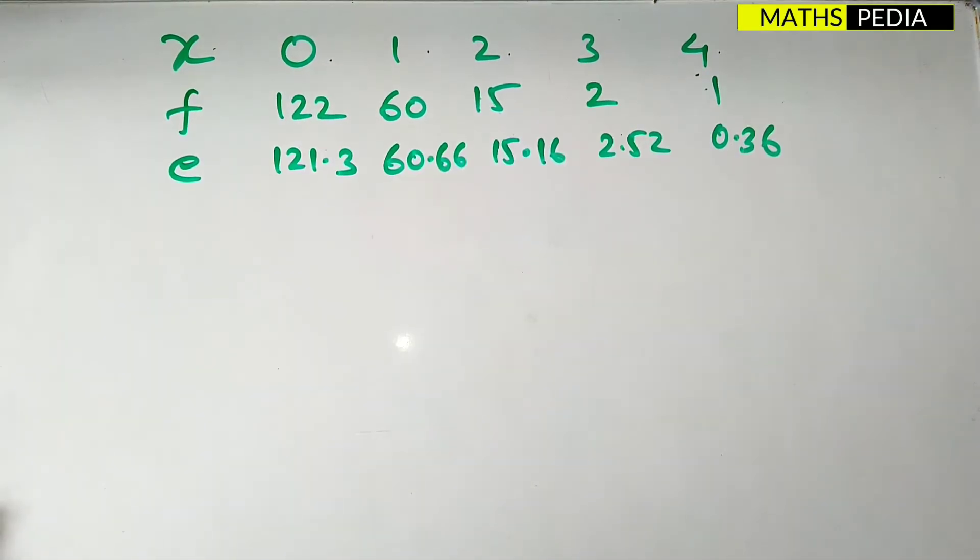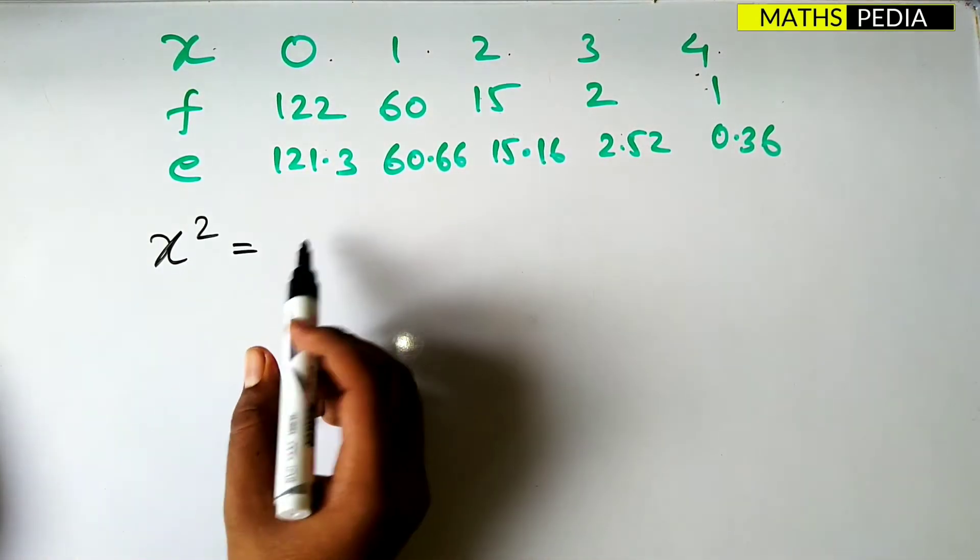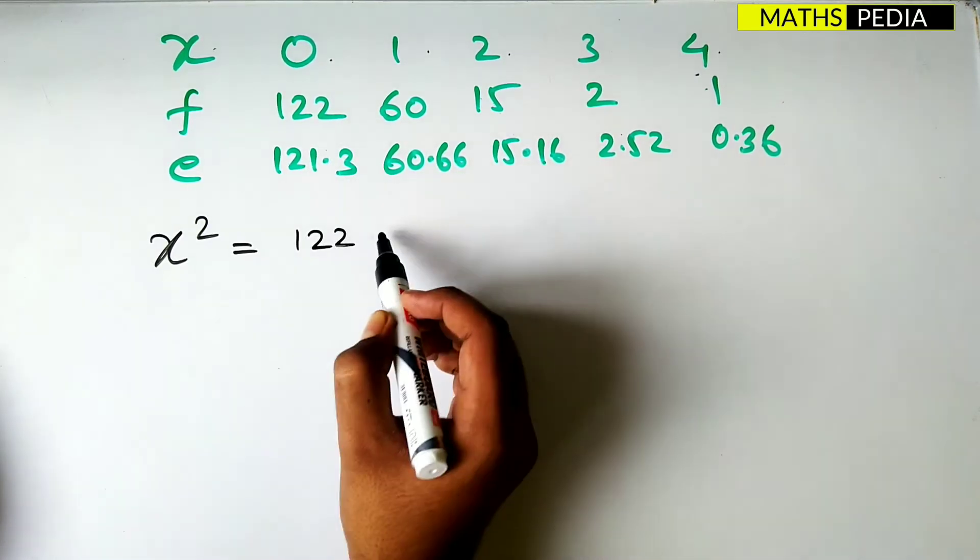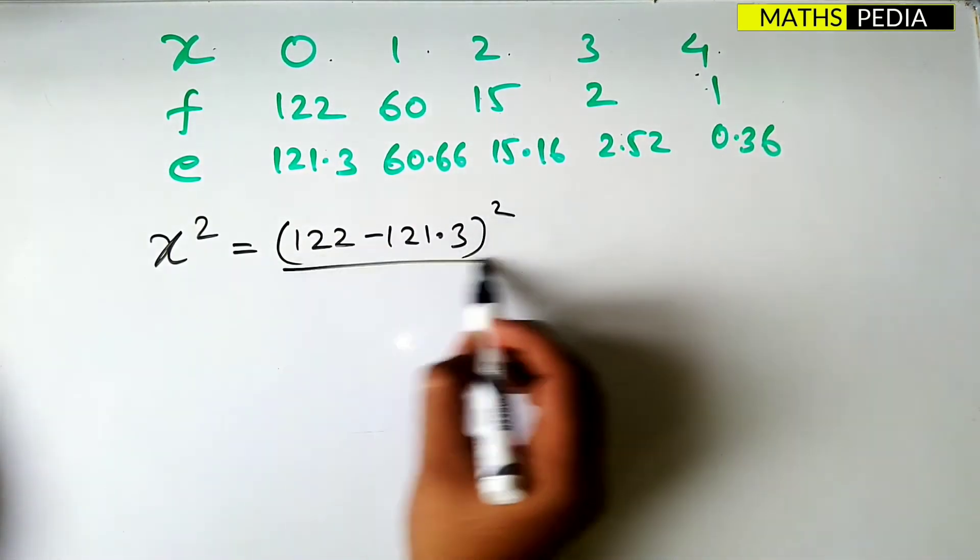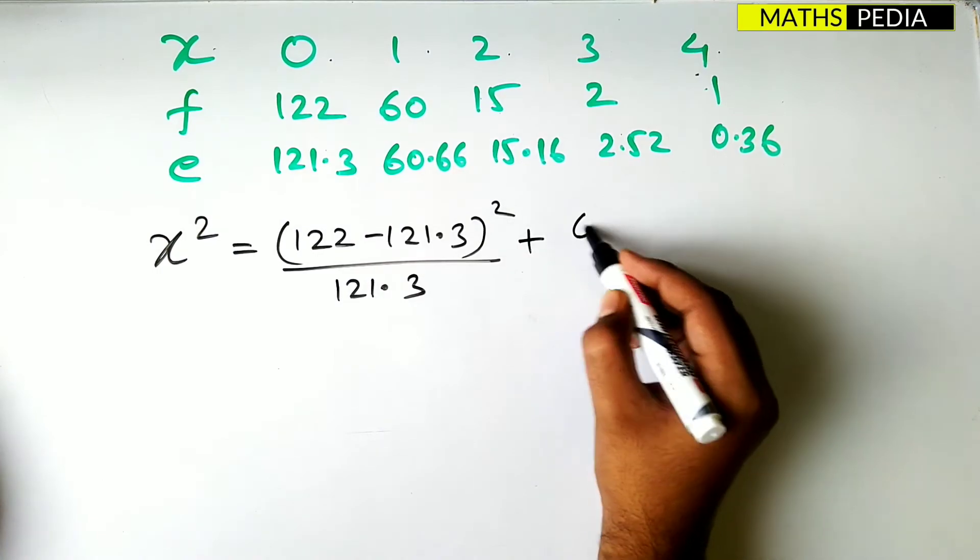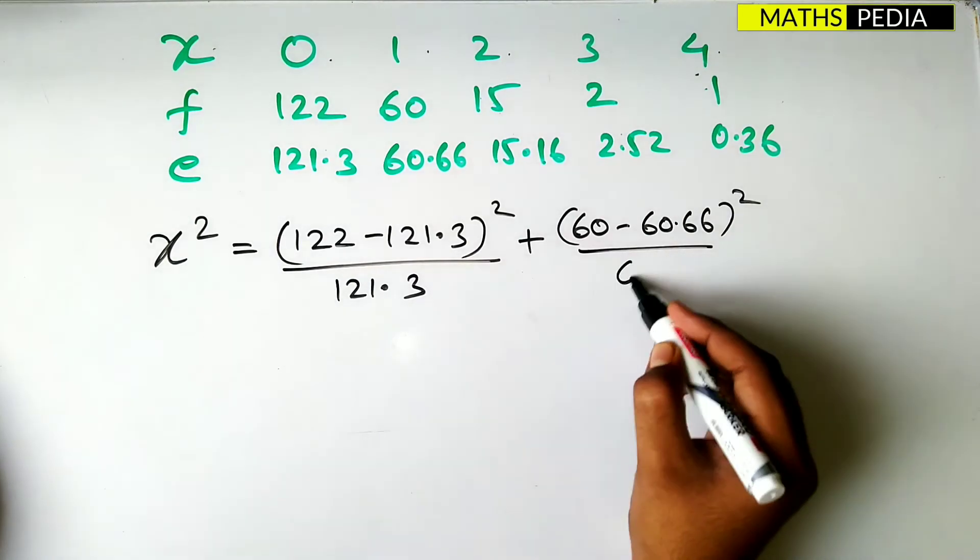So now we will move forward to find out the chi-square value which is equal to what? f minus e the whole square by e. Therefore it is 122 minus 121.3 the whole square by 121.3 plus 60 minus 60.66 the whole square by 60.66.